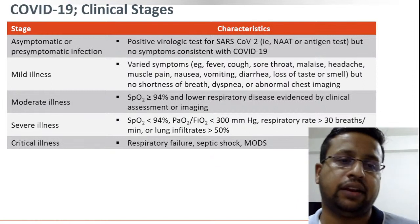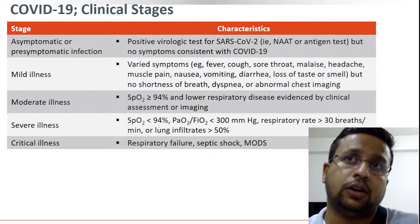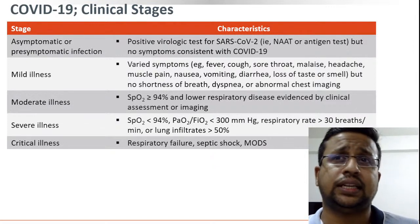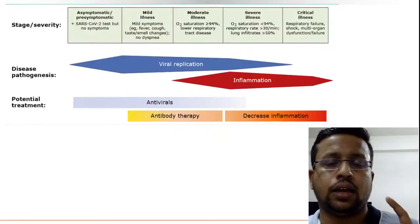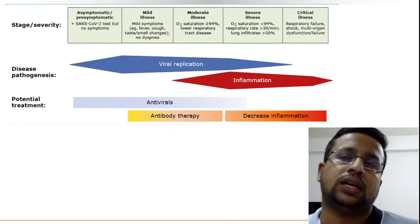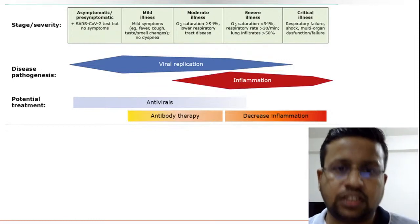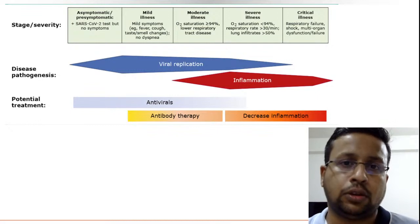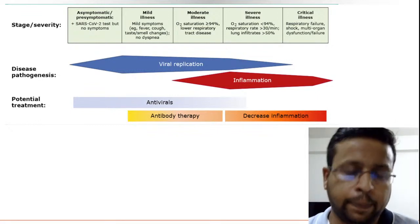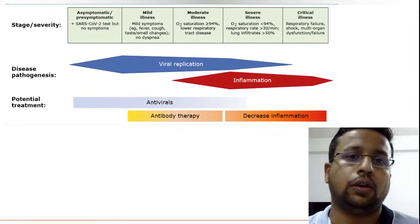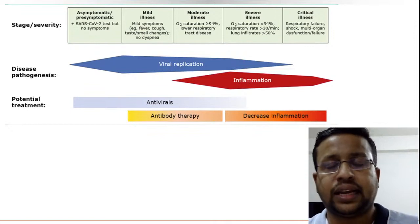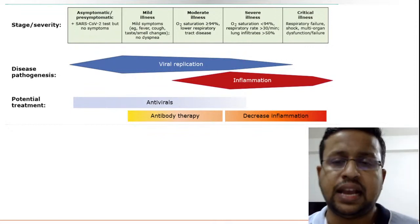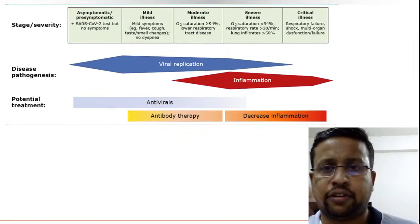Once saturation falls below 94% the disease becomes severe; once the patient requires organ support it becomes critical illness. Most Omicron cases are mild disease. The pathogenic mechanism differs by stage: in the first seven to ten days, clinical manifestations like fever and cough are due to viral replication. From the second week, manifestations are due to the host inflammatory response, which sometimes becomes exaggerated and uncontrolled.